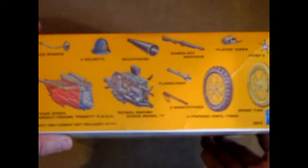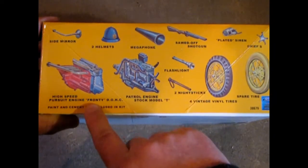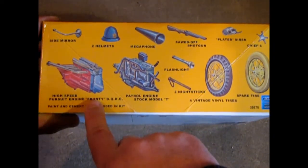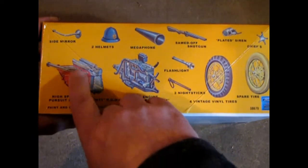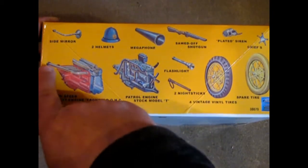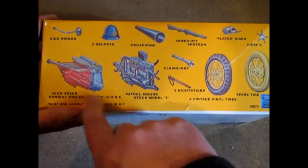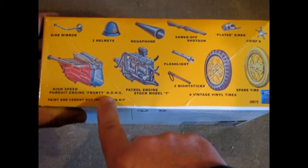This vintage Model T kit shows you the features on the box. You get the high speed Frontiac dual overhead cam conversion kit for your Model T engine. This was a real thing back in the day. You had your overhead cams and your big timing belts and your exhaust. They use this in race cars. Although this says High Speed Pursuit Police Engine.